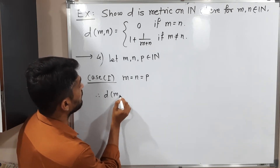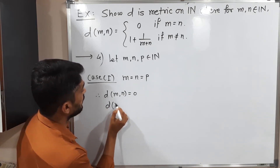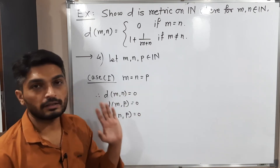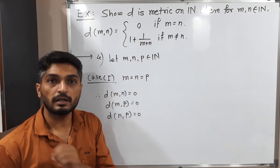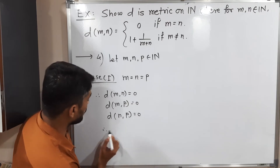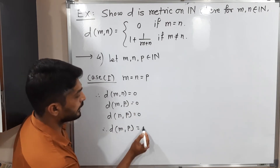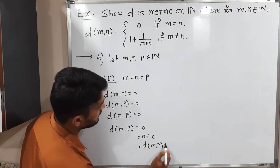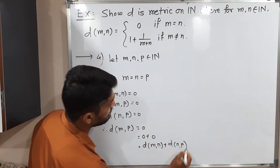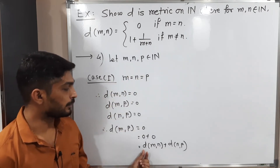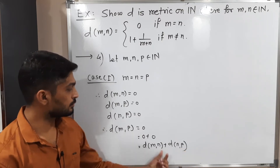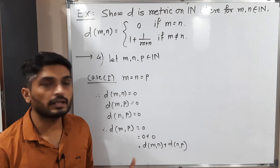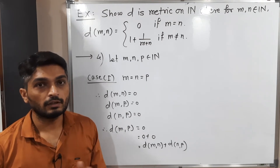If m = n = p, then D(m,n) = 0, D(m,p) = 0, and D(n,p) = 0, since all pairs are equal and the definition gives 0 for equal elements. So D(m,p) = 0 = 0 + 0 = D(m,n) + D(n,p). We obtain equality, which satisfies the triangle inequality D(m,p) ≤ D(m,n) + D(n,p).